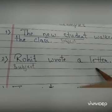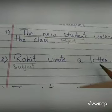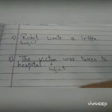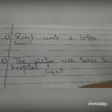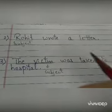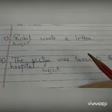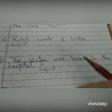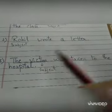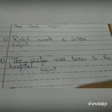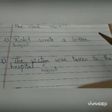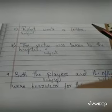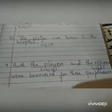The next one: 'Rohit wrote a letter.' Again, the same thing — who wrote a letter? We are getting the answer: Rohit. The next one: 'The victim was taken to the hospital.' You can ask the same question — who was taken to the hospital, or about whom are we talking in the sentence? We are talking about the victim. That is our subject.